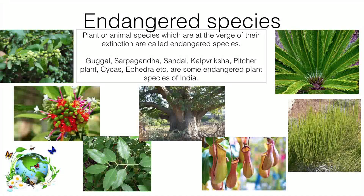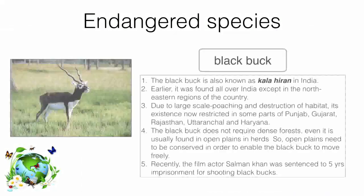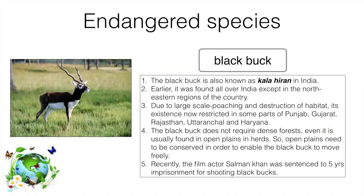The blackbuck, also known as Kala Hiran in India, is an endangered species. Earlier it was found all over India except the northeast. Due to large-scale poaching and destruction of habitat, its existence is now restricted to parts of Punjab, Gujarat, Rajasthan, Uttaranchal, and Haryana. The blackbuck does not require dense forest and is usually found in open plains. Recently, film actor Salman Khan was sentenced to five years imprisonment for shooting a blackbuck.